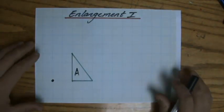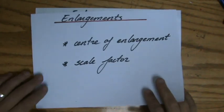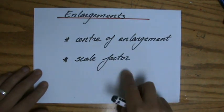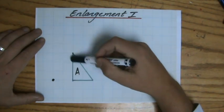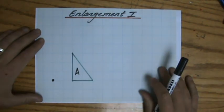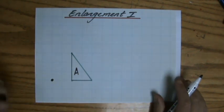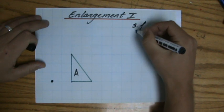For enlargements, they are always going to give you two pieces of information. First of all, they are going to give you a center of enlargement, and secondly, a scale factor. Now I have already drawn this object, this triangle for you. I have named it A, and I have given you the center of enlargement. I put a big dot over there, and let's say the scale factor is 2.